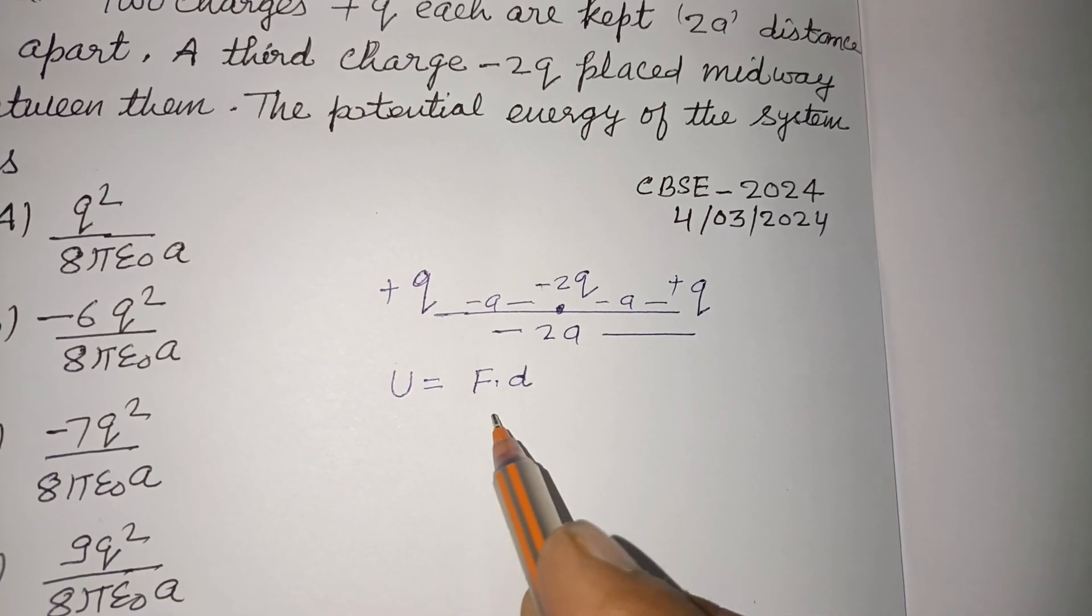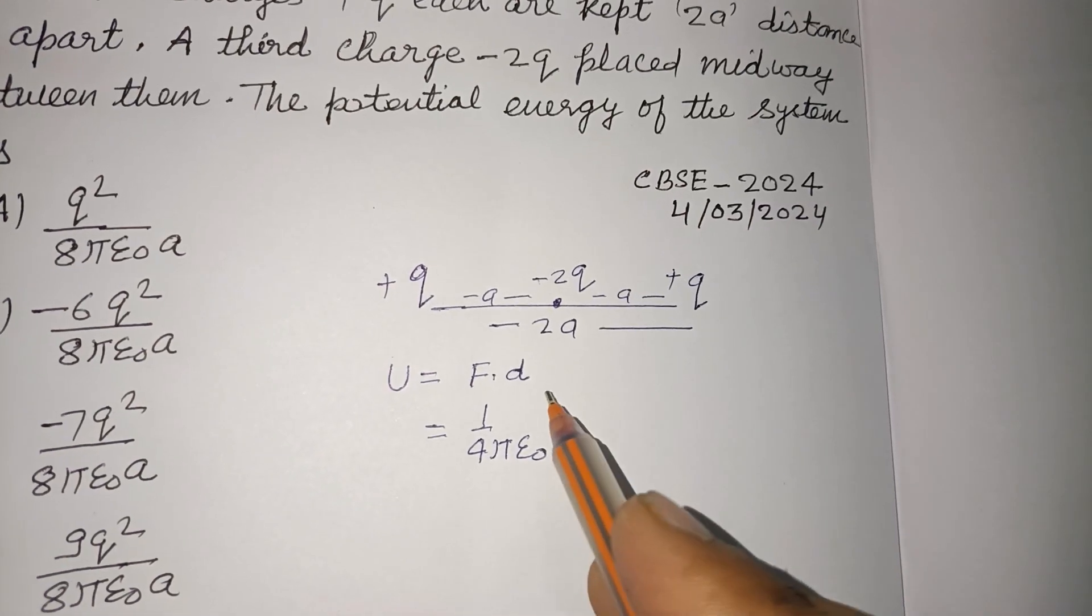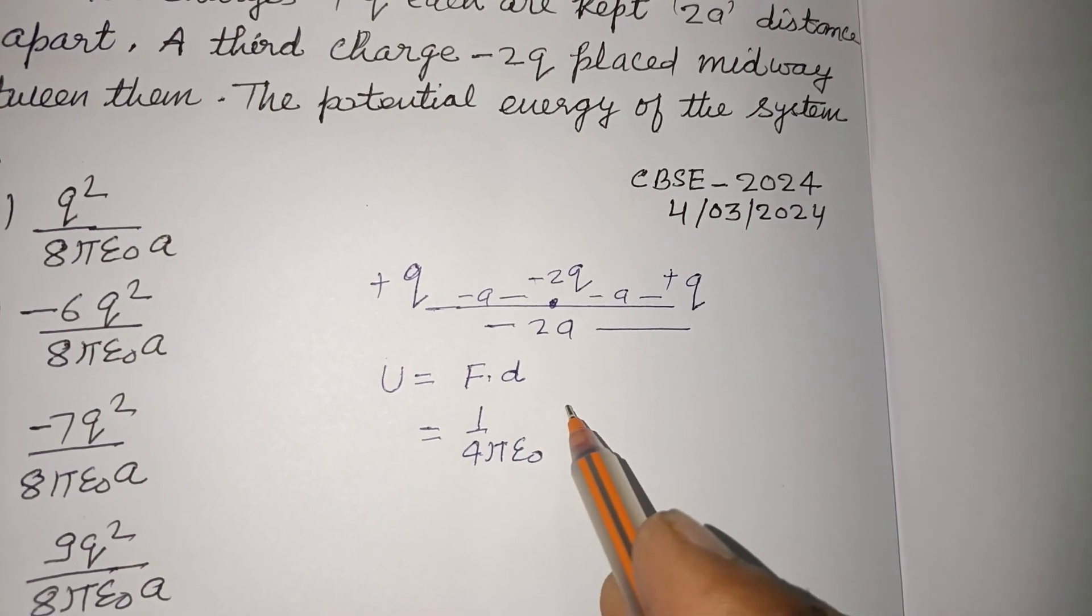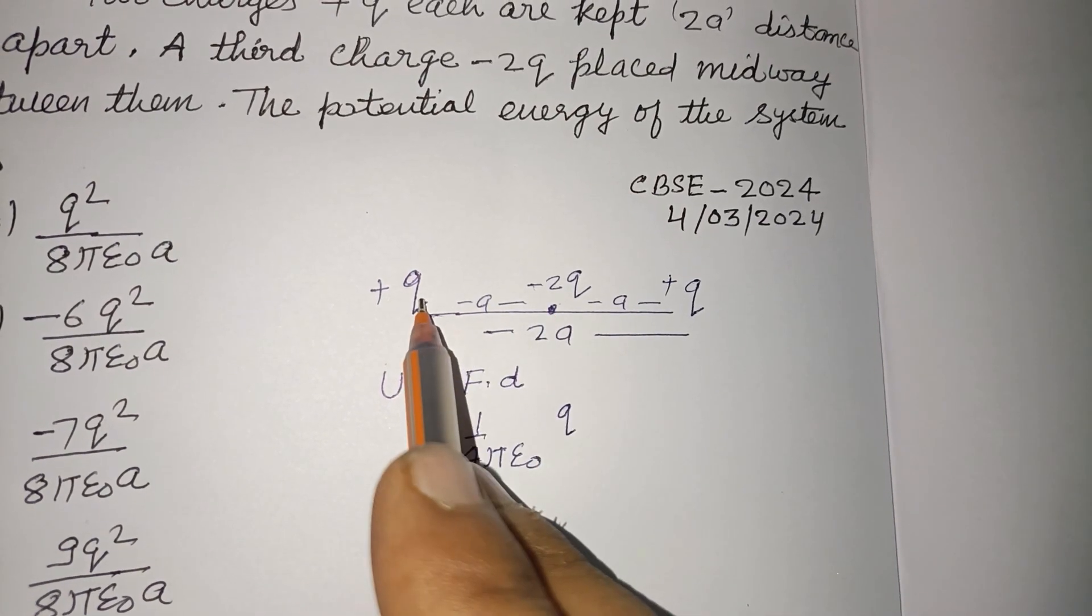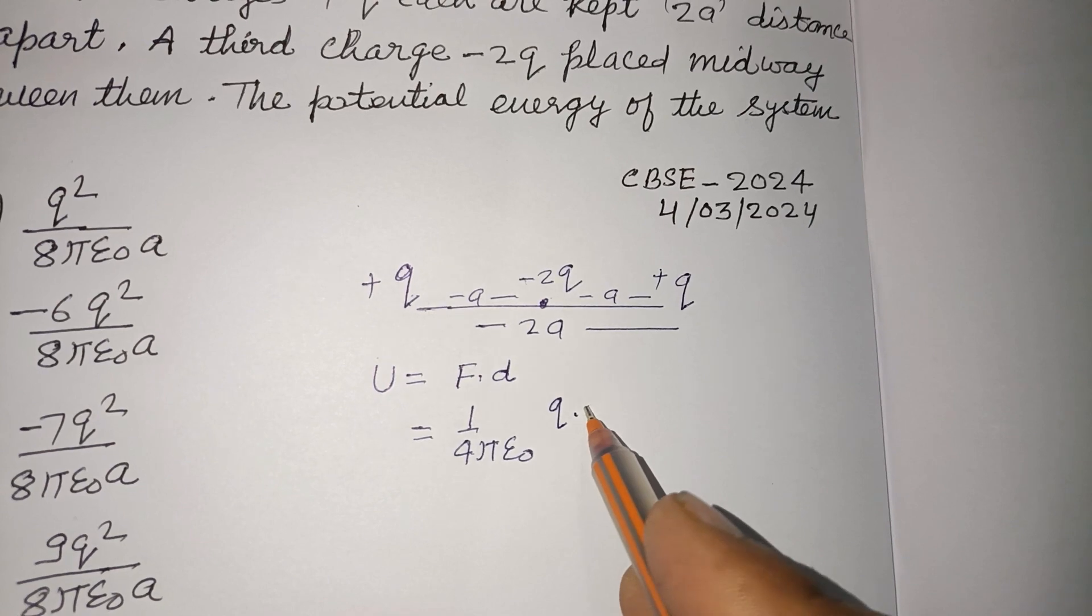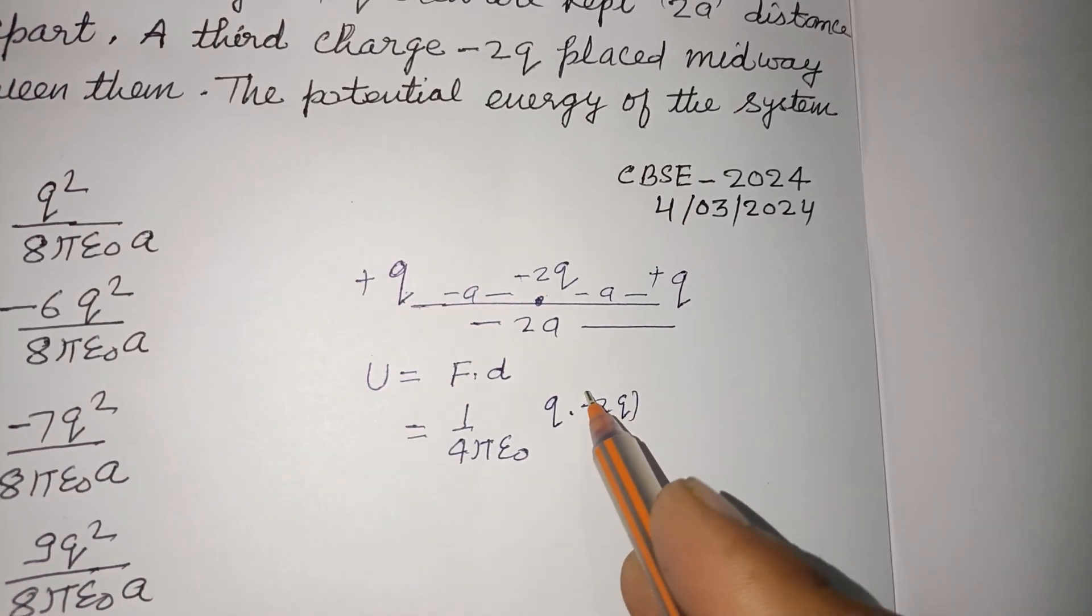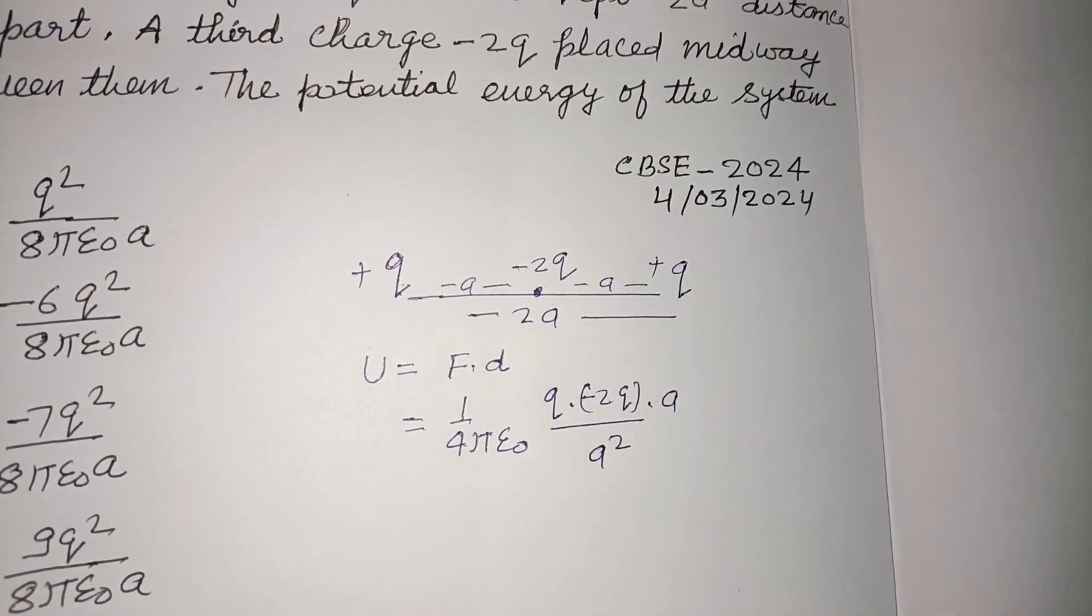So F is 1 upon 4πε₀. Q1, Q2 - here potential energy of this system is -2Q and Q. Q into -2Q into A upon A².